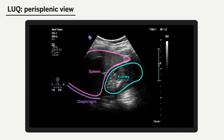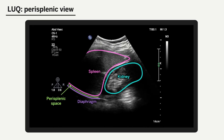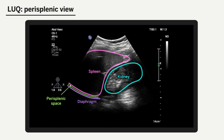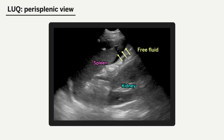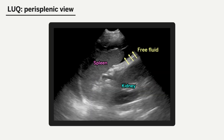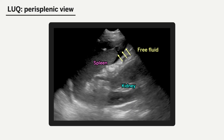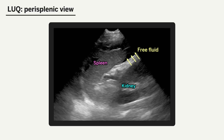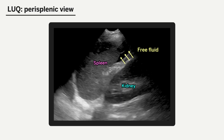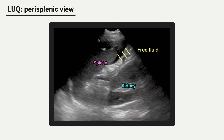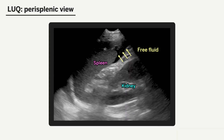In this view, the structures identified include the spleen to the left of the screen, the left kidney to the right of the screen, and the diaphragm to the bottom of the screen. We are looking for free fluid accumulation in two spaces: the perisplenic space between the spleen and the diaphragm, as indicated by the green line, and the splenorenal space between the spleen and the left kidney, as indicated by the yellow line. Free fluid will preferentially be located in the perisplenic space, due to the presence of the splenorenal ligament, which limits the ability of fluid to track between the spleen and the left kidney. In this image, we see free fluid as indicated by the yellow arrows surrounding the spleen.